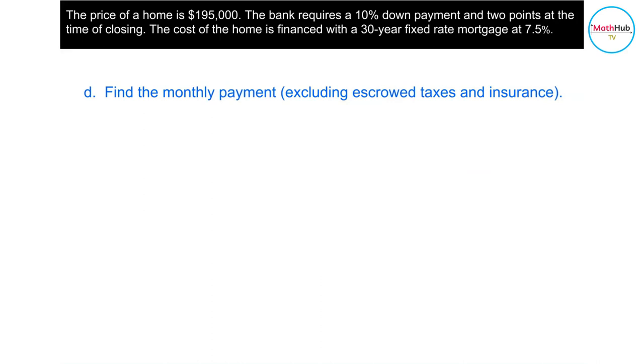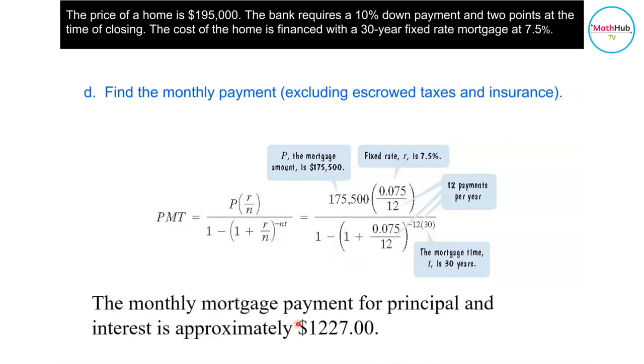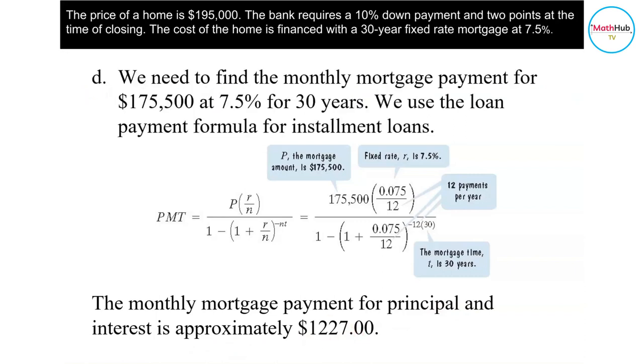Next, we compute the monthly mortgage payment. The monthly mortgage payment for $175,500 at 7.5% for 30 years can be computed using this formula. PMT is the payment required monthly. N equals 12 because we're doing 12 monthly payments per year, and T equals 30 years. P is the mortgage amount of $175,500. The rate is 7.5%, which equals 0.075. Plugging into this formula, the monthly mortgage payment for principal and interest is approximately $1,227.